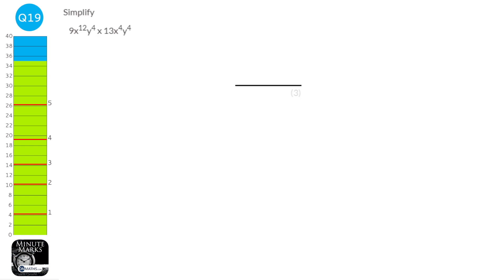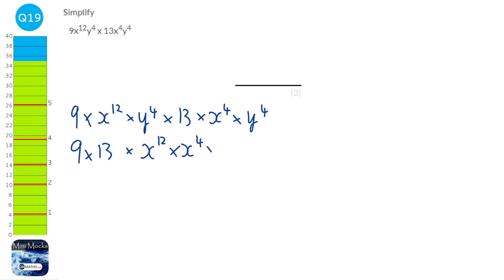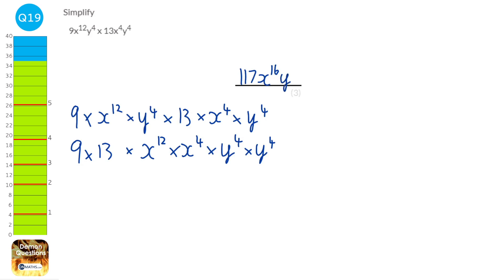There's a lot going on with this question, so let's put in all the multiplication signs. We've got 10 times 12 times x to the power of 12 times y to the power of 4, times 13 times x to the power of 4 times y to the power of 4. Reordering: 9 times 13 is 117 — wait, 10 times 13 is 130. For the x terms: x to the power of 12 times x to the power of 4 — we add the powers to get x to the power of 16. For the y terms: y to the power of 4 times y to the power of 4 equals y to the power of 8.